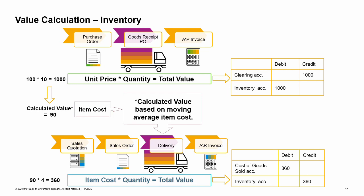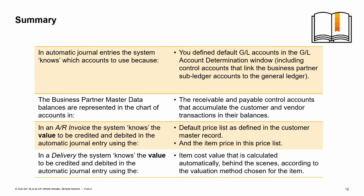Remember that the total value of the invoice based on that delivery was 440. It was calculated according to the reseller price list — 110 — that is defined as the default price list in the customer master data record. In automatic journal entries, the system knows which accounts to use because you define default GL accounts in the GL account determination window. These default accounts include control accounts that link the business partner subledger accounts to the general ledger. The business partner master data balances are represented in the chart of accounts in the receivable and payable control accounts that accumulate the customer and vendor transactions in their balances. In an AR invoice, the system knows the value to be credited and debited using the default price list as defined in the customer master record and the item price in that price list. In a delivery, the system knows the value to be credited and debited using the item cost value that is calculated automatically behind the scenes according to the valuation method chosen for the item.